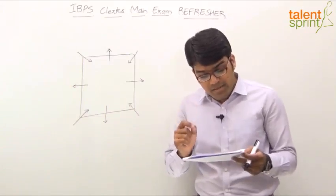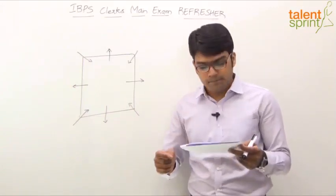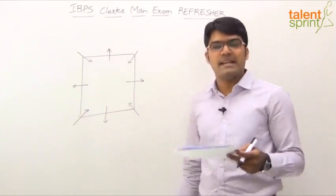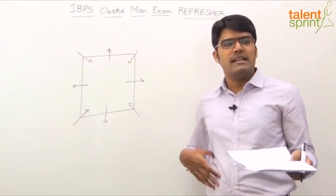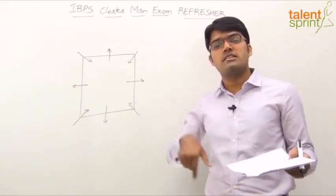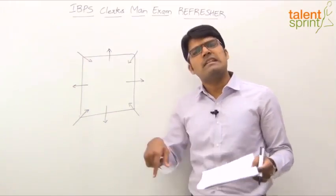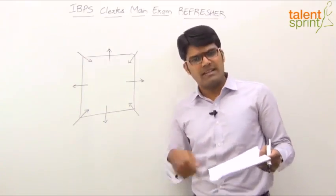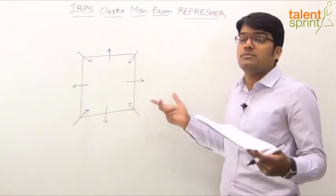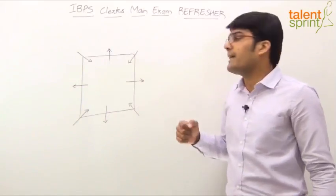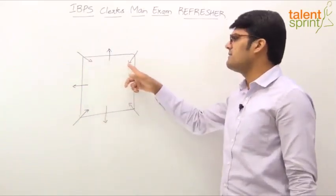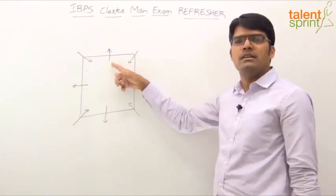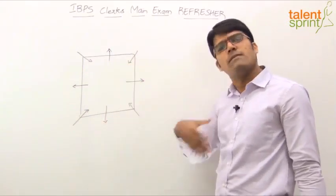Statement 1: S is an immediate neighbour of both E and V. S sits in the middle of one of the sides of the table. Like I've told you earlier also, in case of a circular arrangement or in case of a closed arrangement, we can start from anywhere on the circle. We can start from anywhere on the table. There's no fixed position. There's no first position.